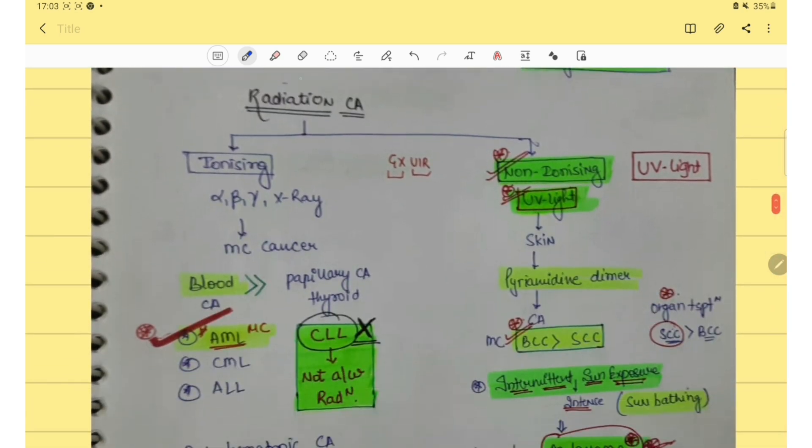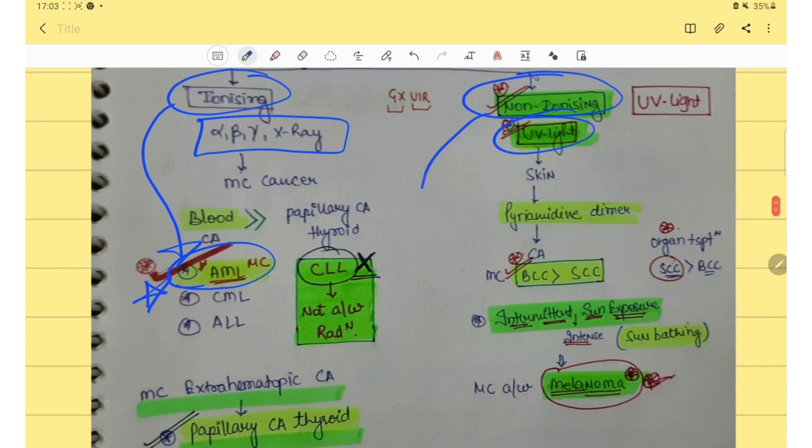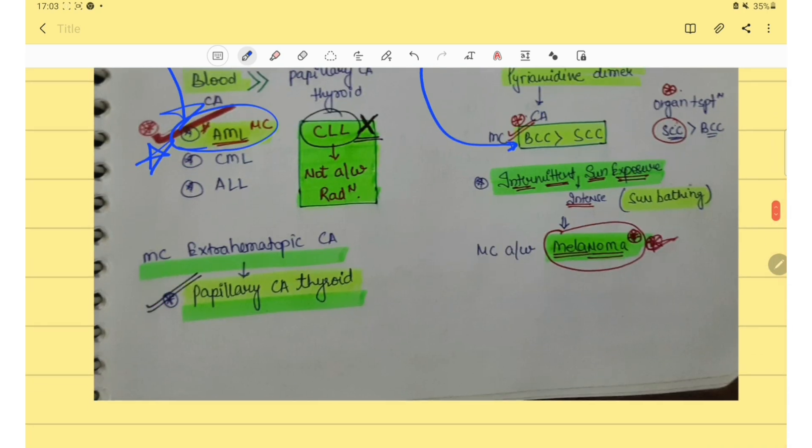Then second thing is radiation carcinoma. We have ionizing and non-ionizing radiation. In ionizing we have alpha beta gamma x-rays and in non-ionizing we have UV light. The most common cancer caused by ionizing radiation is AML. And in non-ionizing it's BCC, basal cell carcinoma.